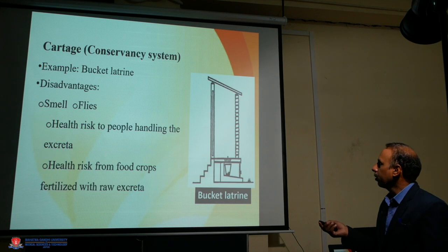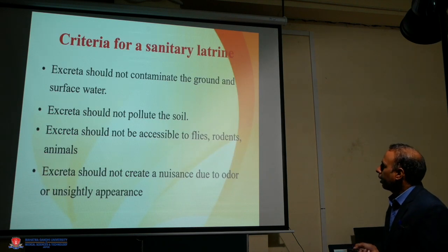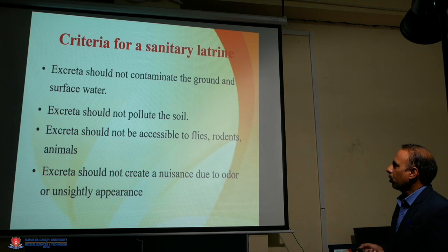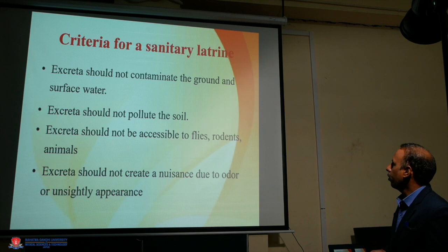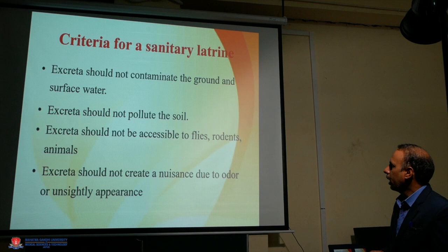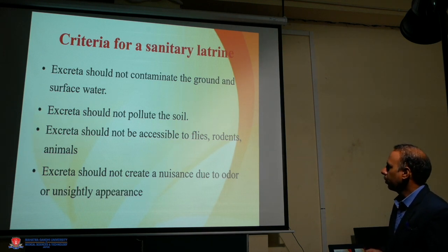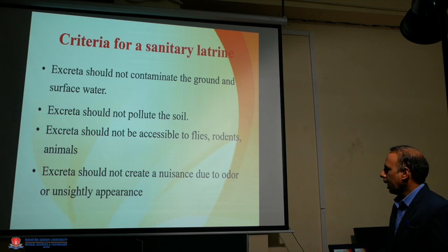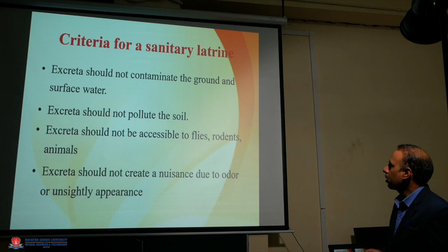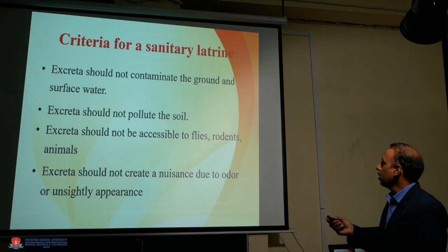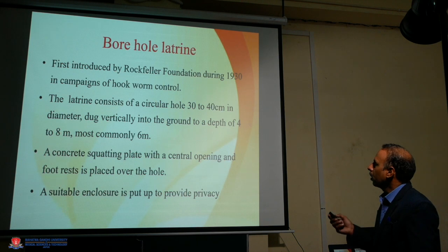Regarding sanitary latrines — what are the criteria for a sanitary latrine? Excreta should not contaminate ground or surface water; excreta should not pollute the soil; excreta should not be accessible to flies, rodents, and animals; excreta should not create a nuisance due to odor or unsightly appearance. These are the criteria for a sanitary latrine.